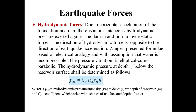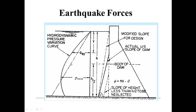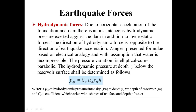Next are the hydrodynamic forces. Due to horizontal acceleration of the foundation of the dam, there is an extraneous hydrodynamic pressure exerted on the dam in addition to hydrostatic forces. The direction of hydrodynamic forces is opposite to the direction of earthquake acceleration. Zenger's formula, based on electrical analogy methods and with the assumption that water is incompressible, gives a pressure variation that is elliptical-parabolic. The hydrodynamic pressure at a depth y below the reservoir surface is: P_ey = C_S × alpha_H × gamma_W × H.